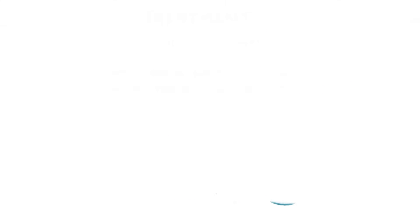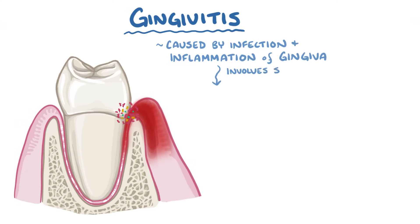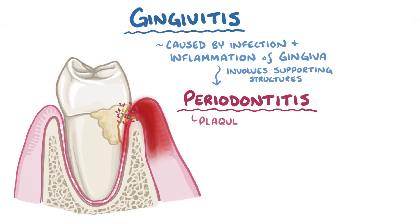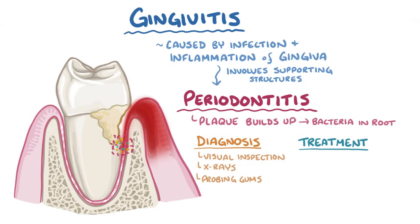As a quick recap: gingivitis is caused by infection and inflammation of the gingiva that can grow to involve the tooth-supporting structures, which is called periodontitis. When dental plaque builds up near the gum line, it can allow bacteria to invade toward the root of the tooth. Diagnosis is done via visual inspection, x-rays, and probing the gums. Treatment of severe cases might include removal of the infected tissue, antibiotics, and surgery.